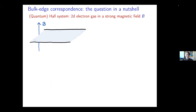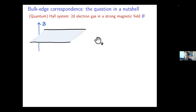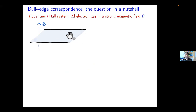This slide is for people who don't know what the bulk-edge correspondence in quantum Hall systems is. We will be interested in a two-dimensional electron gas confined to a two-dimensional strip, often called a Hall bar, in a strong magnetic field perpendicular to this plane.